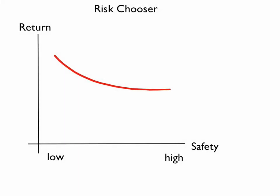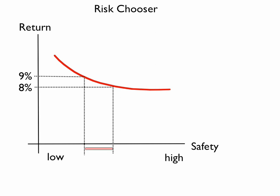Here's another indifference curve, and what this represents is risk and safety. With a flat indifference curve, we see that this is a risk chooser. If we look at a return of 8% and a return of 9%, this demonstrates that a person is willing to give up a large degree of safety for a small return of 1%. And if we line those up, you can see it's more obvious.